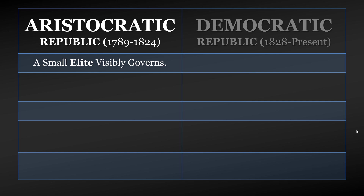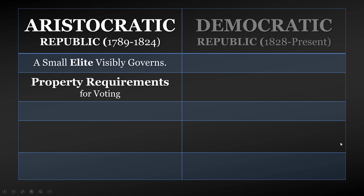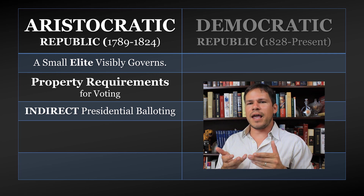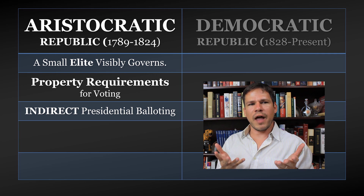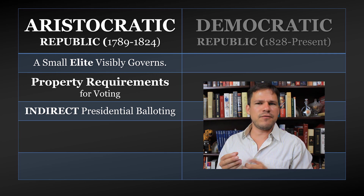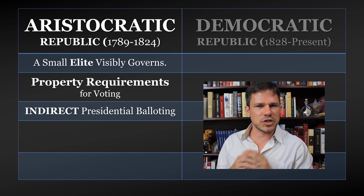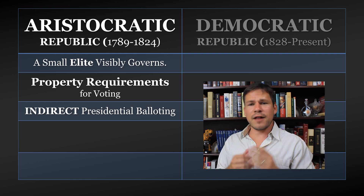In aristocratic republics, a small elite visibly governs — this was the United States through 1824. There are property requirements for voting. If you look at the early Roman Republic or the early United States, people had to own a certain amount of property to vote, showing they have a stake in the government, paying taxes and so on. There was also indirect presidential balloting. Today in every state we vote through the Electoral College, and individual voters express their preferences — that's how the state casts its electoral votes, or at least how they're supposed to.